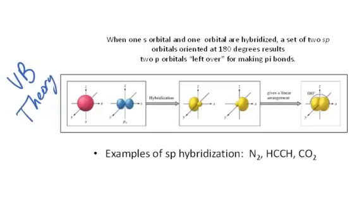Valence bond theory. When 1s and 1p orbitals are hybridized, a set of two sp orbitals oriented 180 degrees apart results. Two p orbitals are left over, and they can be used for making pi bonds.